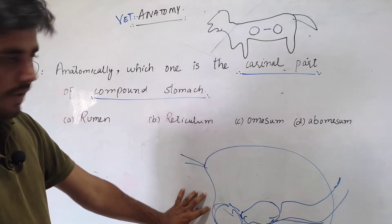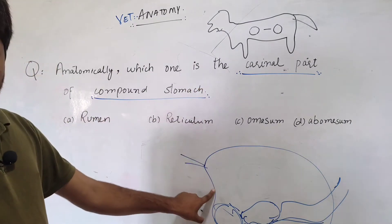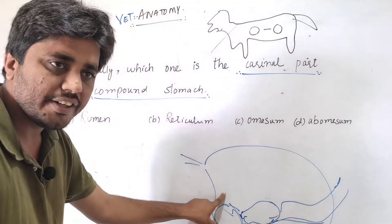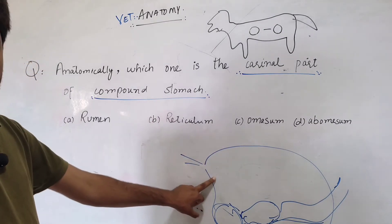Functionally, you can say the rumen is still the first part. You know why? Because the esophagus is entering into the rumen. So rumen is the first part.